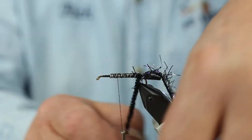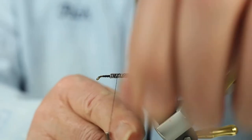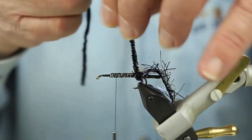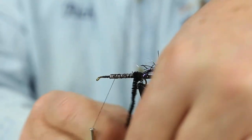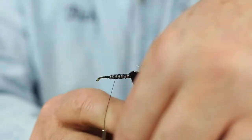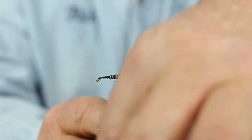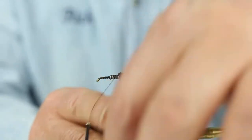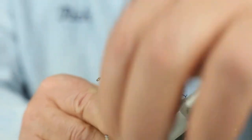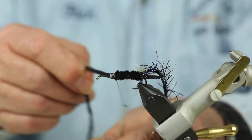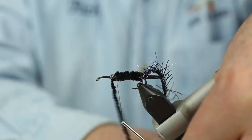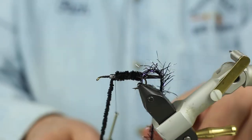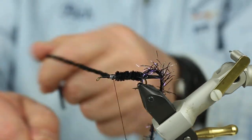I'm going to take my black chenille and make turns toward the bobbin. And when I get to the bobbin, I'm going to make some turns, but I'm not going to cut the chenille off.